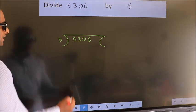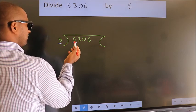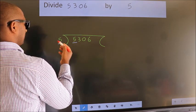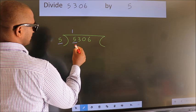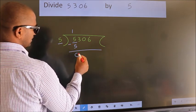Next, here we have 5, here 5. When do we get 5? In 5 table, 5 once, 5. Now we should subtract. We get 0.